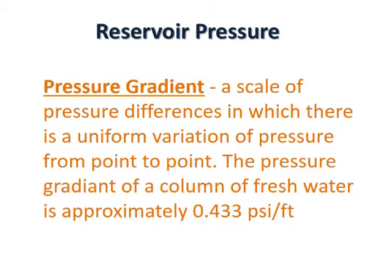To begin our talk on reservoir pressure, let's first define the term pressure gradient. Pressure gradient is a scale of pressure differences in which there is a uniform variation of pressure from point to point. The pressure gradient of a column of freshwater is approximately 0.433 psi per foot.